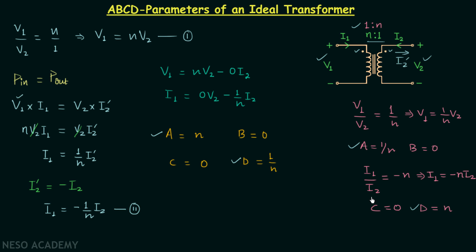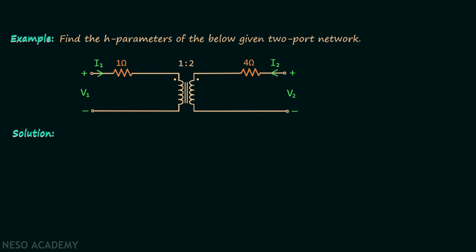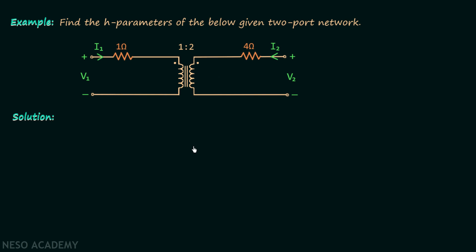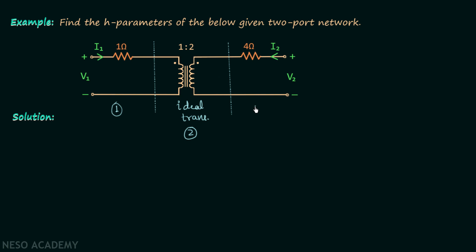Remember the ABCD parameters for an ideal transformer. Now we will solve an example problem involving a two-port network with an ideal transformer having turns ratio 1 to 2, where we are required to find the H parameters. The approach is to divide the network into smaller two-port sub-networks connected in cascade — network one, network two, and network three — find their ABCD (T) parameters, multiply them, and finally convert to H parameters.